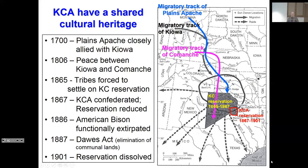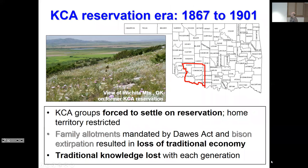If you talk to any of these groups, I'm not doing it justice going over it in such a short period of time. Let's look at the reservation area. The outline in red is the reservation they were in until 1901 — that's where most of the tribal peoples who haven't relocated actually are today. They were forced to settle on their reservation with home territory restricted to family allotments — a dramatic change, particularly when they weren't farmers or ranchers. There are no bison, and traditional knowledge is lost in every generation.